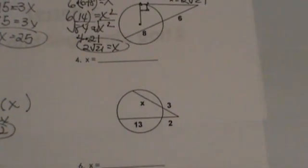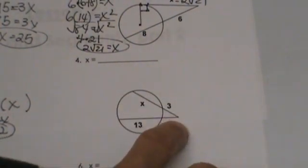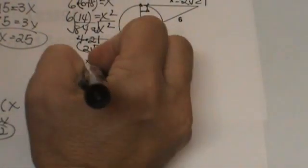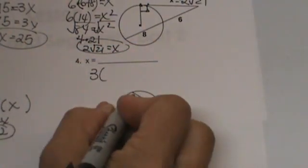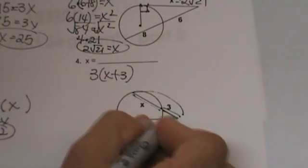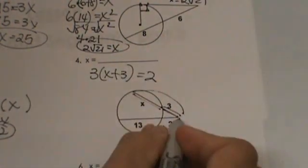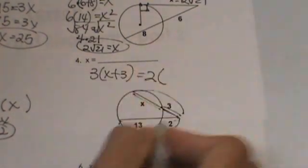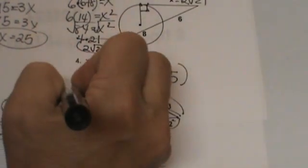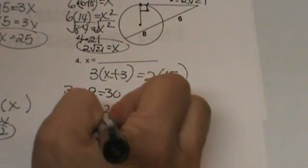Let's look at number 4. Number 4 we have two secants, so outside times the whole thing, outside times the whole thing. The outside is 3, the inside is x, but we need the whole thing, so we do need to add together. We are going to take x plus 3, and then this one is 2 and then the whole secant segment is 2 plus 13 or 15. Now let's distribute: 3x plus 9 equals 30, so 3x equals 21, so x is 7.